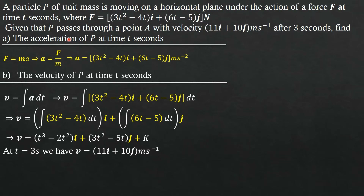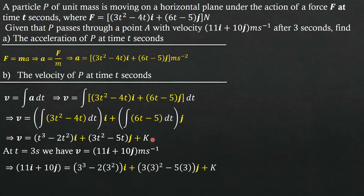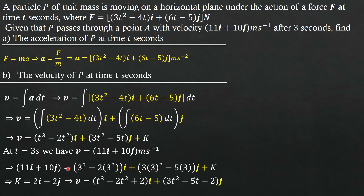We are told that particle P passes through point A with velocity 11i + 10j after 3 seconds. We use this initial condition to find the constant of integration. Substituting t = 3 and equating to 11i + 10j, we bring like terms together and subtract. Solving carefully, the constant of integration turns out to be 2i − 2j.